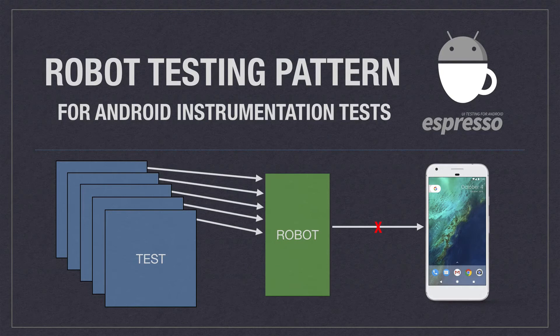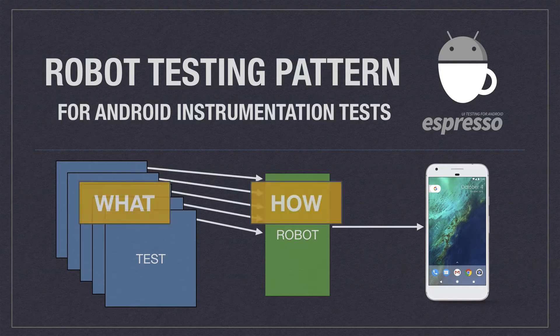By using robots, we can separate out what we are testing from how we are actually testing it, to facilitate decoupled code. This increases readability and maintainability.